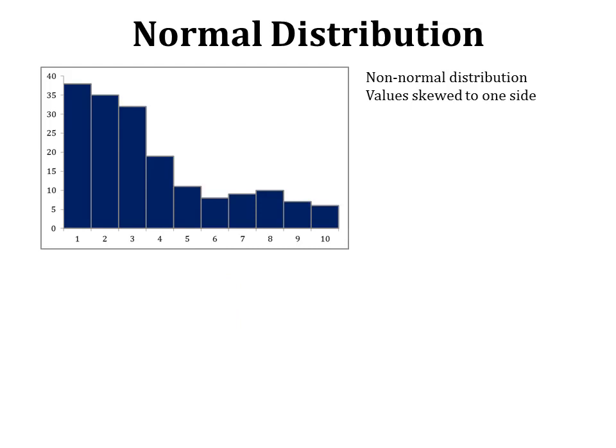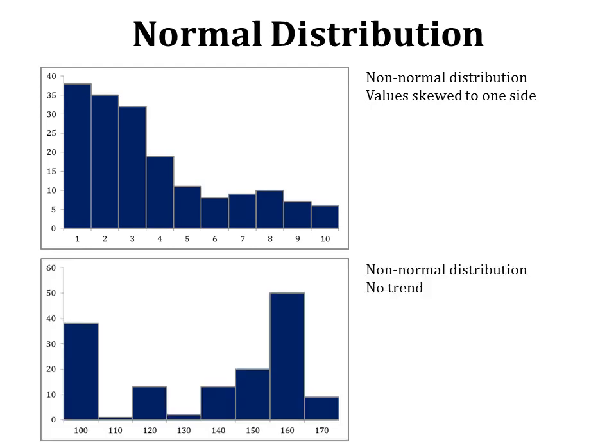In contrast, non-normal distributions show values skewed to one side, where the concentration is not in the middle. Another type of non-normal distribution shows no trend at all — you cannot identify a central value, and you cannot apply the rules of standard error or probability to this type of observation distribution.